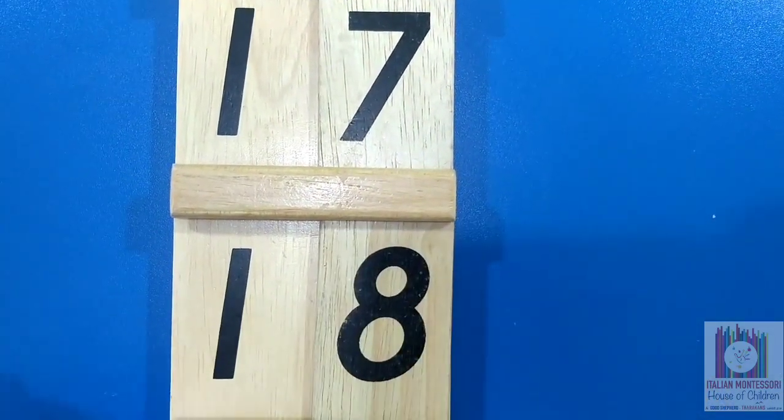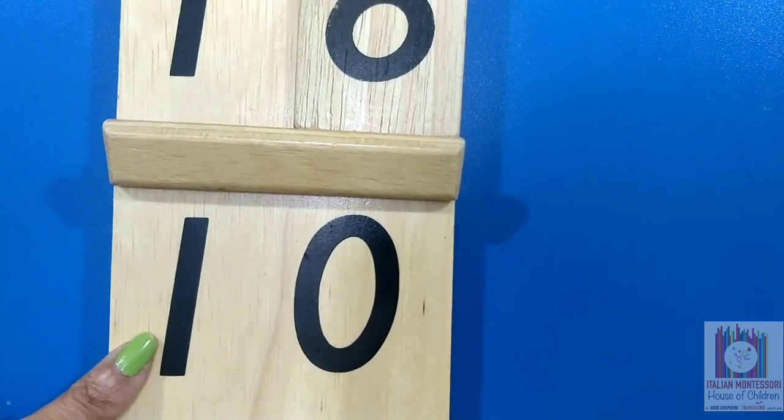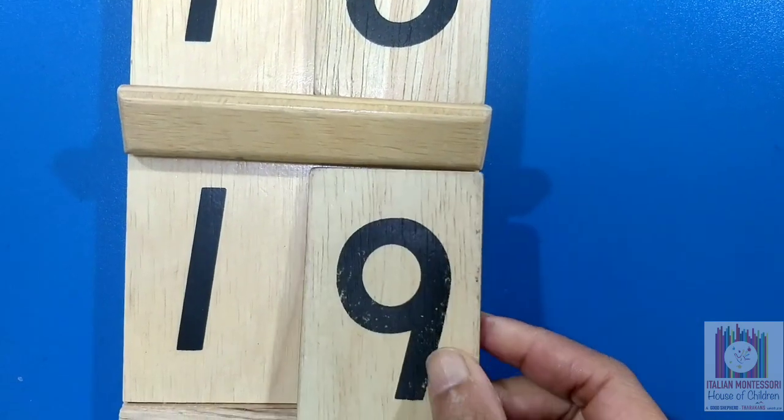This is 18. This is 10, 1, 10, 1. 10 and 9 units makes 19.